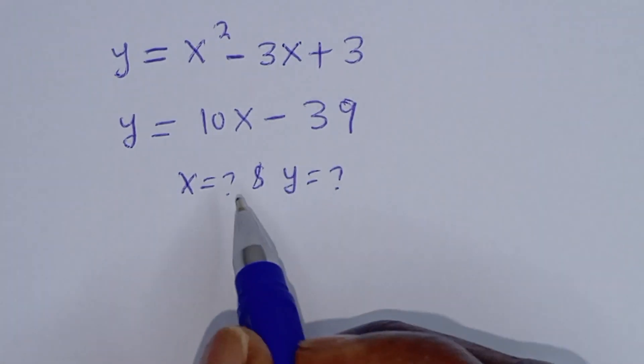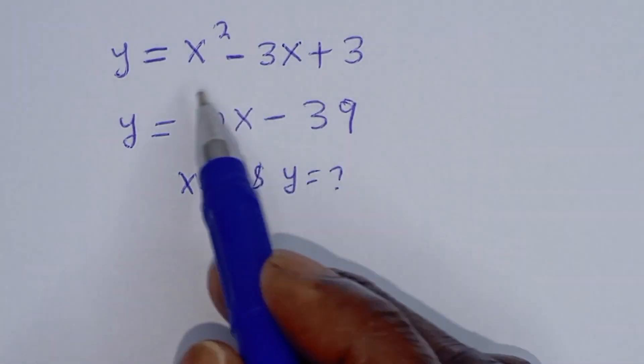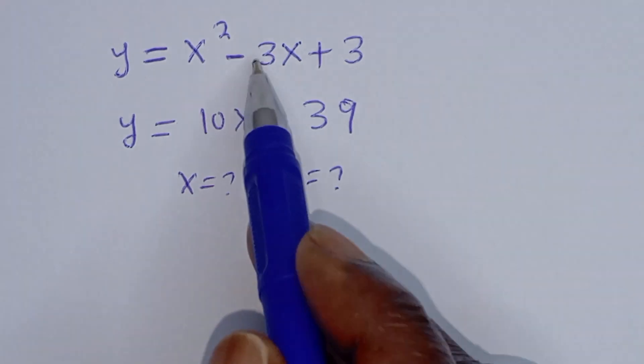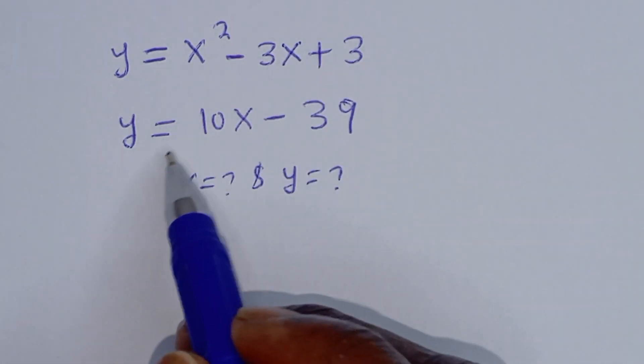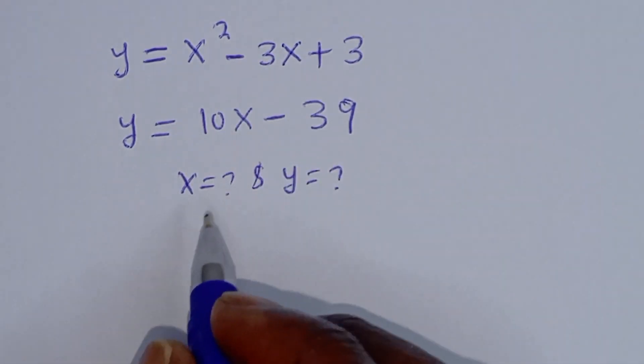Hello. How to solve for S and Y from this given algebra problem. Y is equal to S squared minus 3S plus 3, and Y is equal to 10S minus 39.